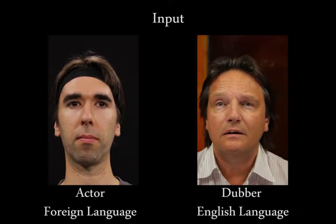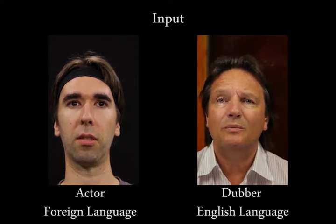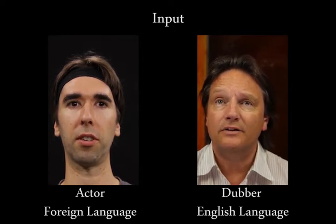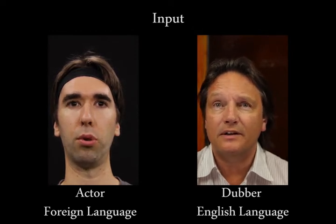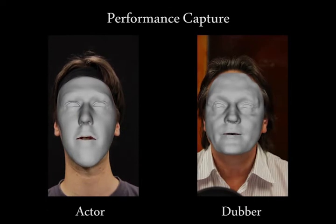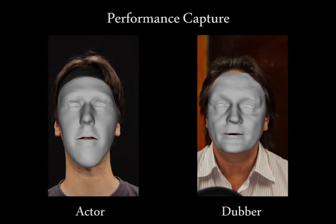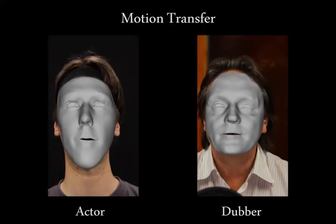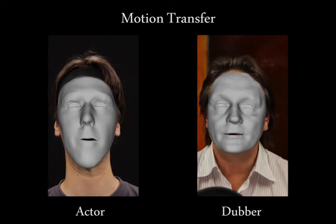Here we see the original target video of the actor on the left and the recorded dubber on the right. We first capture the facial performance of both using a blend shape model-based performance capture method. This method also estimates scene lighting and fine-scale skin detail. We then transfer the blending weights pertaining to the mouth motion from the dubber to the actor, so the actor now appears to speak in the dubbing language.